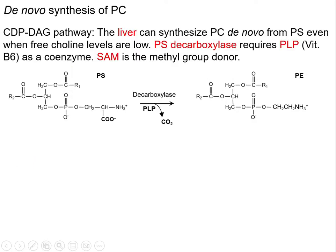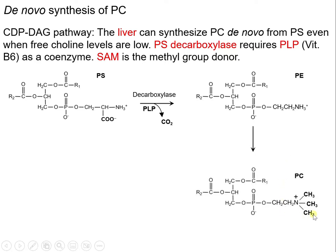Here we take a closer look at the CDP-DAG pathway. This is PS. The carboxyl group is removed by a decarboxylase, and the result is PE. This enzyme requires PLP as a coenzyme. PE is then converted to PC by the addition of three methyl groups, which are derived from SAM.